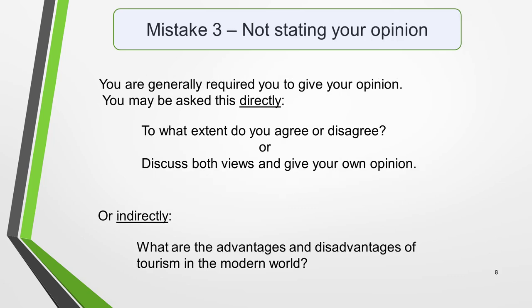Mistake 3 is not stating your opinion. Task 2 writing tasks generally require you to give your opinion. Usually this will be clearly stated in the question — for example, 'To what extent do you agree or disagree?' or 'Discuss both views and give your opinion.' In other questions it won't be so clear, for example, 'What are the advantages and disadvantages of tourism in the modern world?' However, your opinion — the main idea of your essay — is still required. If you always include it in the introduction, as well as throughout your essay, you won't go wrong.